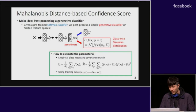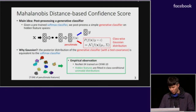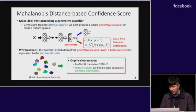Specifically, we define a class-conditional Gaussian distribution on the hidden feature space, where we estimate its parameters using an empirical class mean and covariance matrix from training samples. Our approach is based on a theoretical connection that the posterior distribution of a generative classifier with a tied covariance matrix is equivalent to the softmax classifier. So we expect that training the softmax classifier has some effect of fitting the hidden features to a Gaussian distribution. As shown in this figure, we indeed found that the hidden features of a ResNet trained on CIFAR dataset follow a class-conditional unimodal distribution.